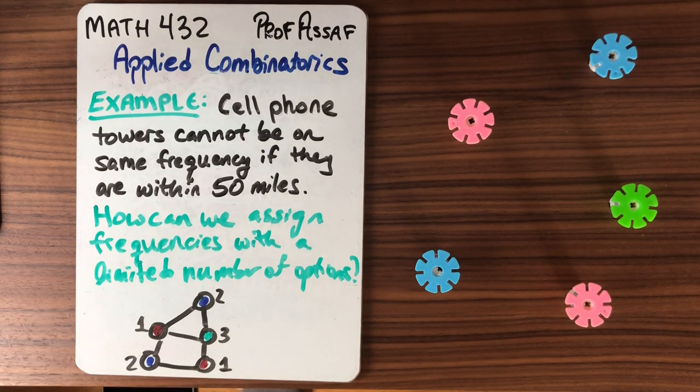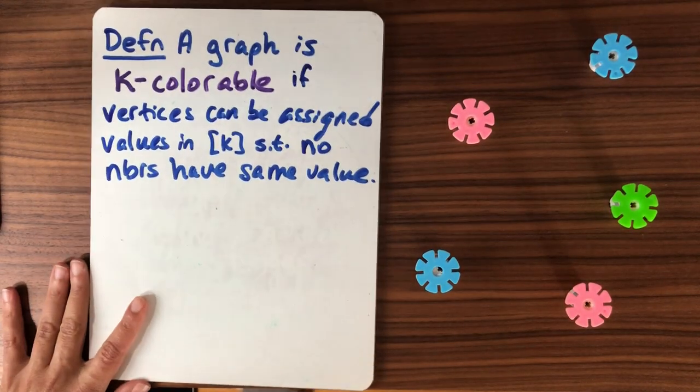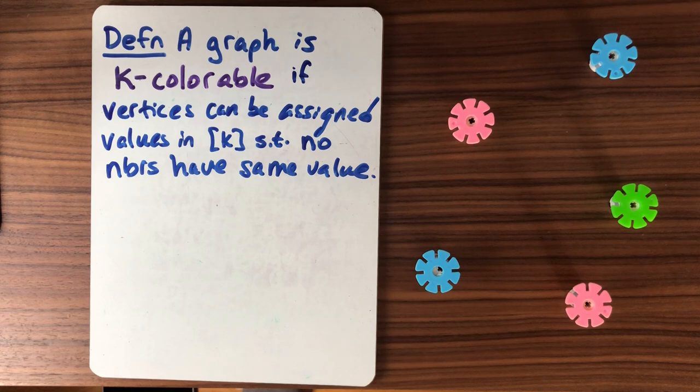So what does it mean for a graph to be colorable? Here's the definition. A graph is k-colorable if the vertices can be assigned values from 1 up to k such that no two neighbors have the same value.